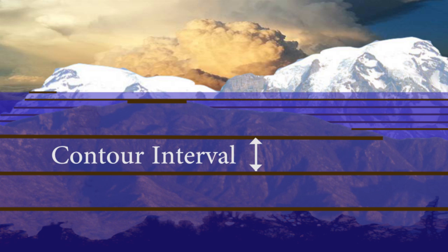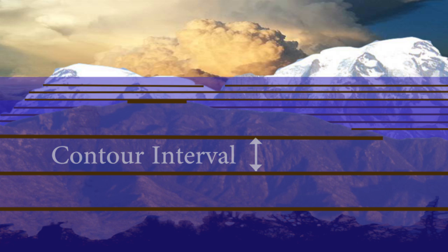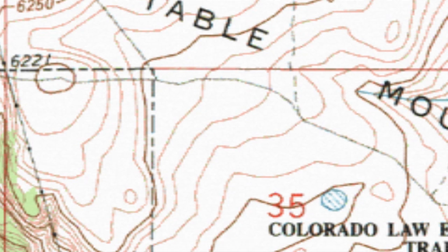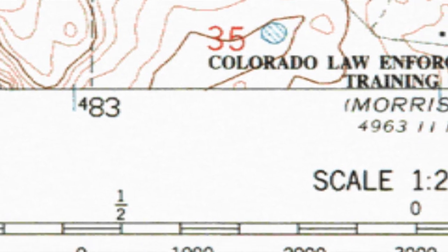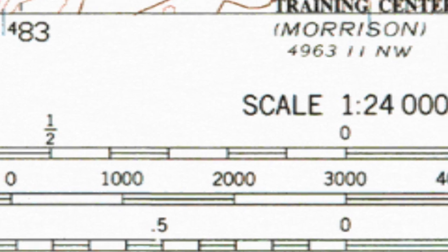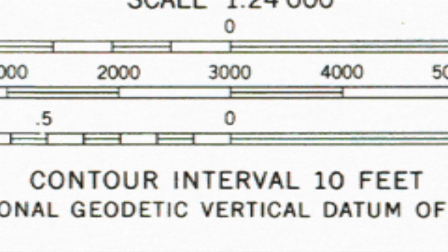The difference in elevation between any two adjacent lines is called the contour interval, and our topographic maps tell us the contour interval right here, under the scale.